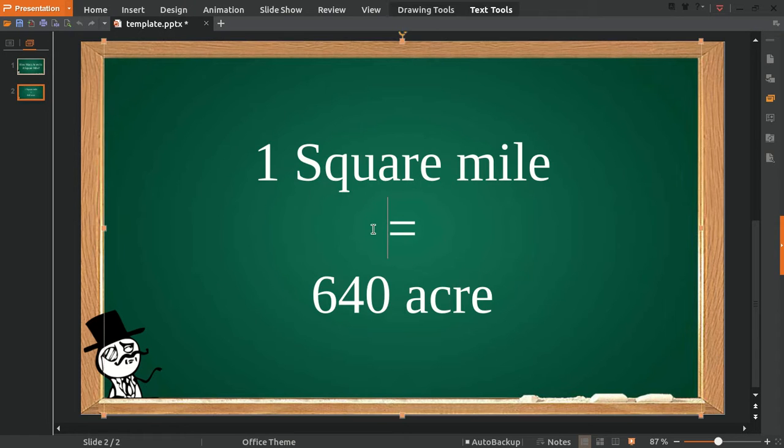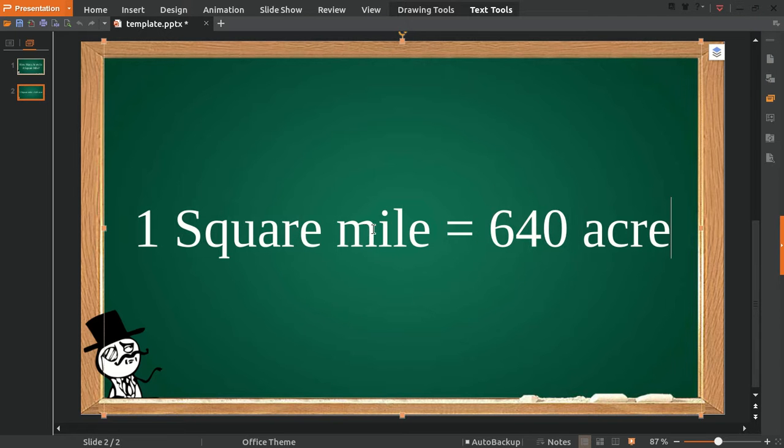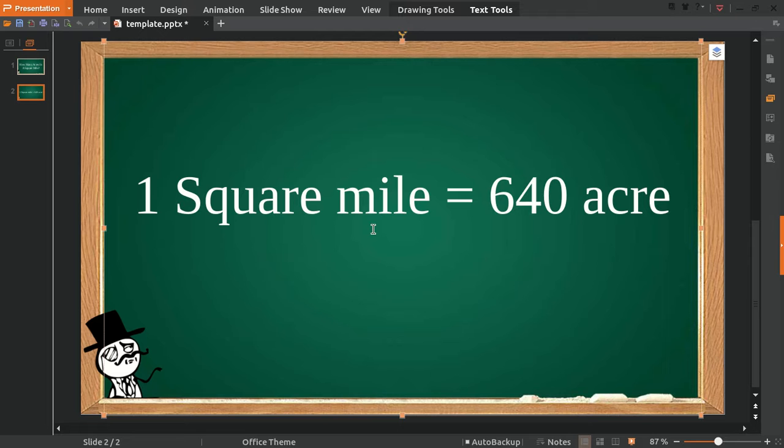One square mile is equal to 640 acres. But we won't stop here; we're going to create another question. For example, I want to know how many acres are in two square miles.